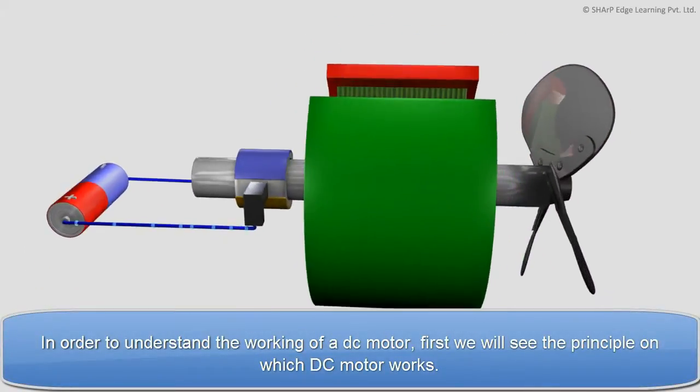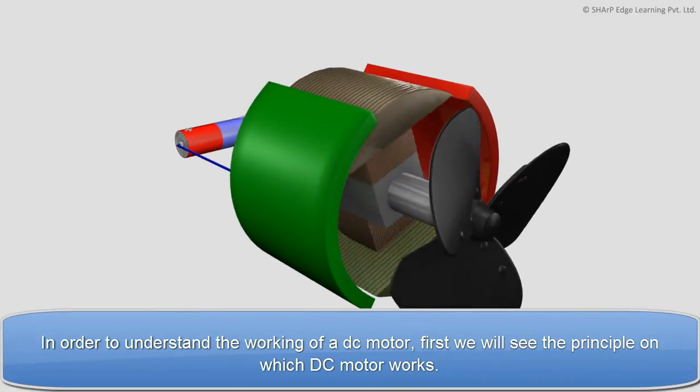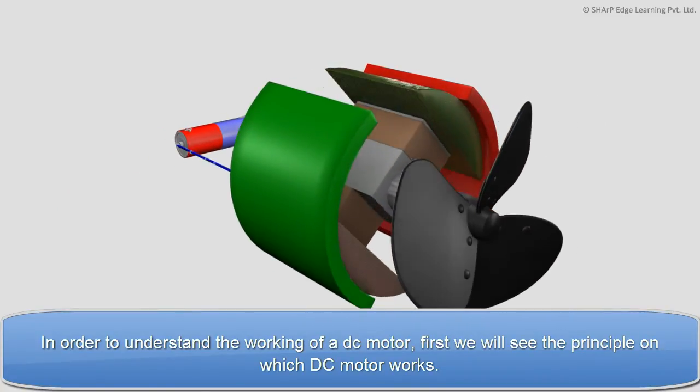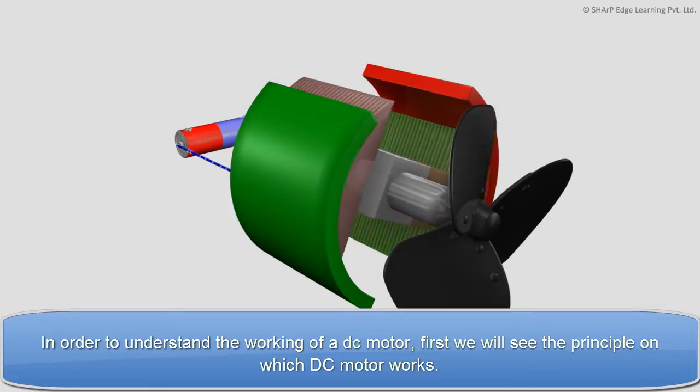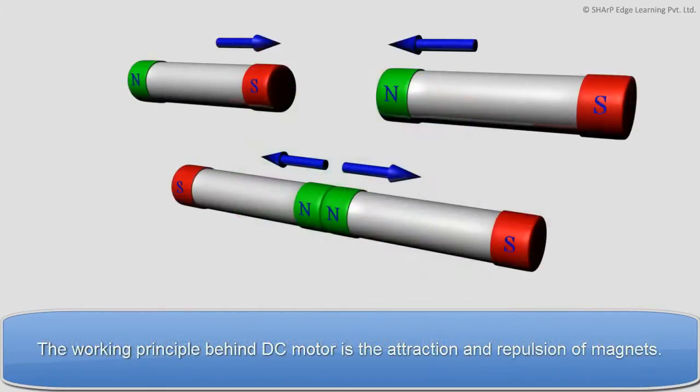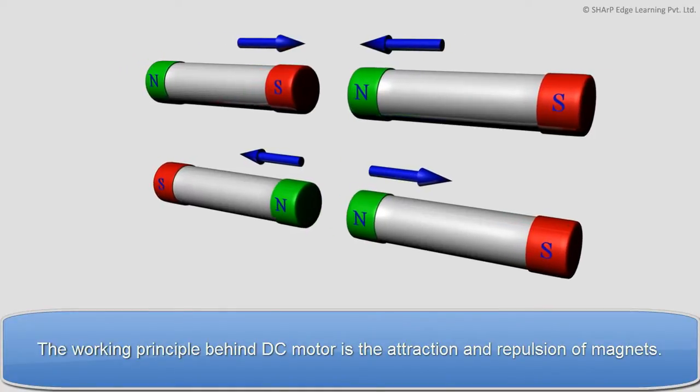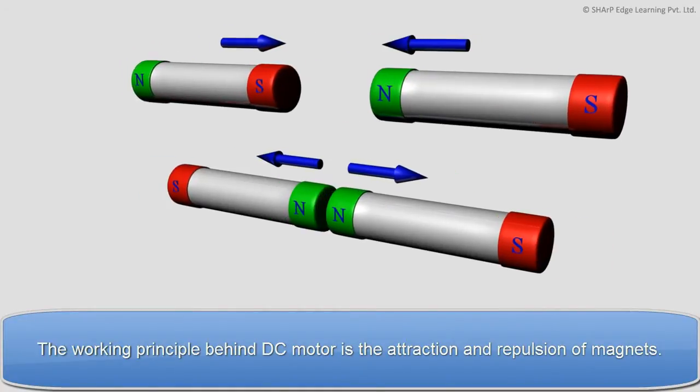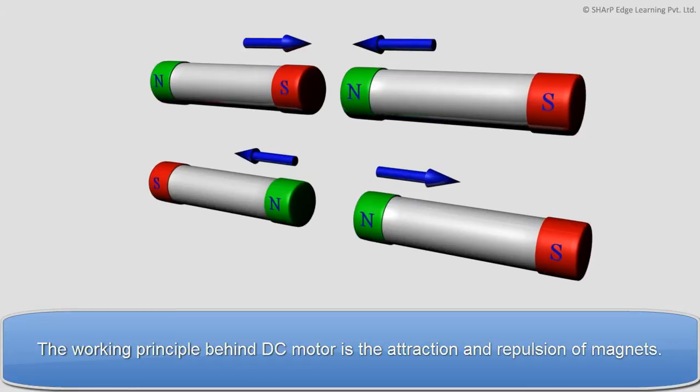In order to understand the working of a DC motor, first we will see the principle on which DC motor works. The working principle behind DC motor is the attraction and repulsion of magnets.